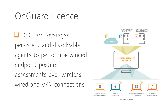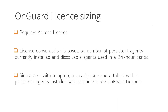The last license type is OnGuard. OnGuard leverages persistent and dissolvable agents to perform advanced endpoint posture assessments over wireless, wired, and VPN connections. You can then configure ClearPass to take action based on the assessment result: grant access to the network, direct the client to the remediation network, or simply deny access. You will need an active Access license in order to use OnGuard functionality — it will not work with an Entry license.